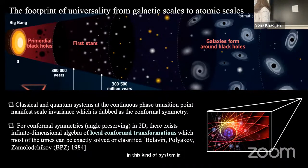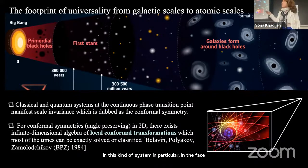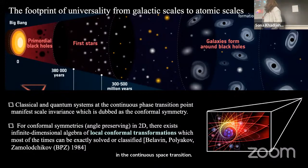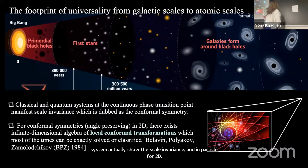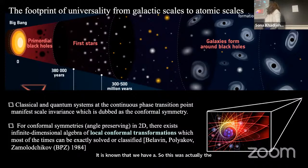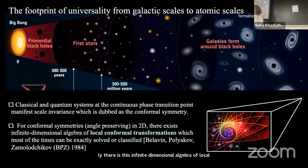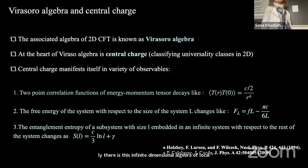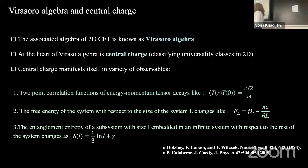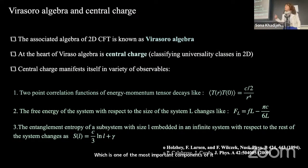One focus of this talk is exploring fundamental science in the quantum simulator. If we look at nature, we can see a lot of universal properties from galaxy scales down to atomic particles, because of the symmetries and associated mathematical structures in these systems. In particular, at continuous phase transitions, the system shows scale invariance, and for 2D systems it is known that we have conformal symmetry. This was the seminal work of Belavin, Polyakov, and Zamolodchikov, who showed that in 2D there exists an infinite-dimensional algebra of local conformal transformations. At the heart of this conformal field theory is the Virasoro algebra, whose most important component is the central charge, which can be used to classify universality in 2D systems.